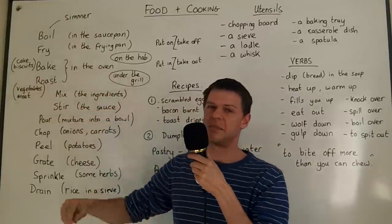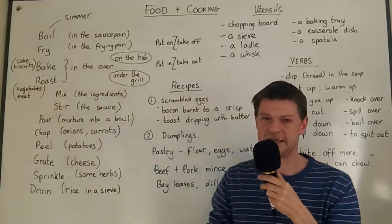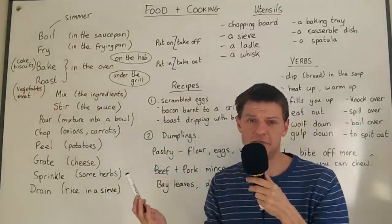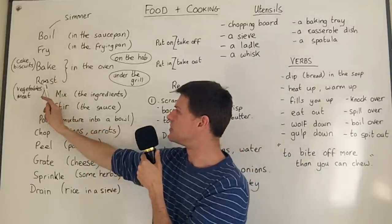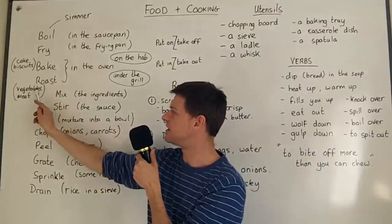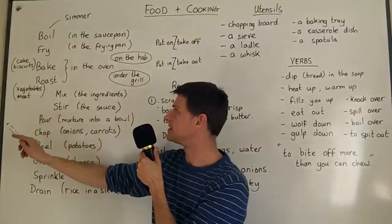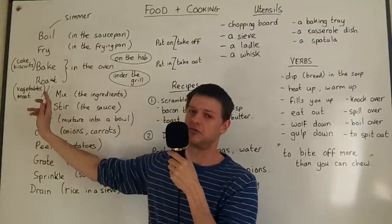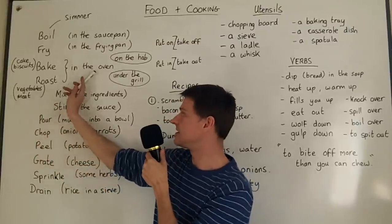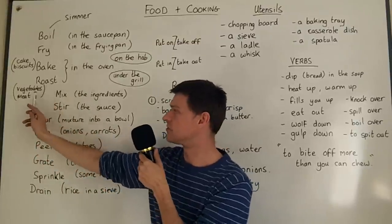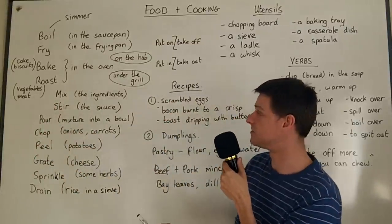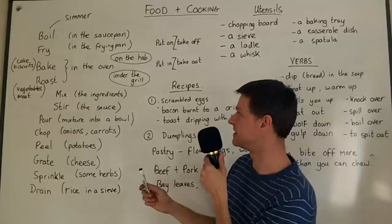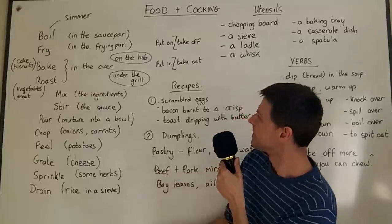You can bake something in the oven — you really only bake cakes, biscuits, and bread-related things. But you roast vegetables and meat. So you can roast chicken or roast turkey in the oven, and you can also roast vegetables — roast potatoes, roast carrots.